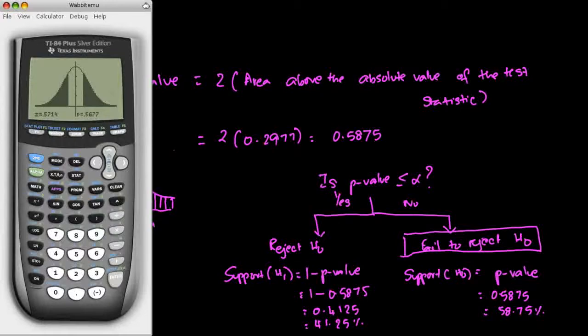Adding the two areas is equivalent to saying two times the area above the absolute value of the test statistic because the normal distribution is symmetric. If you observe, the area on the right tail is similar to the area on the left tail. Therefore, when you add them together, you just multiply it by 2. You take the area on one side and multiply it by 2, which is equivalent to adding the area on the right tail and the area on the left tail.